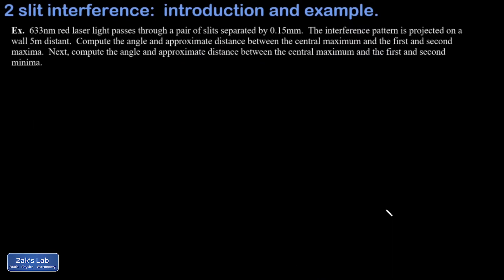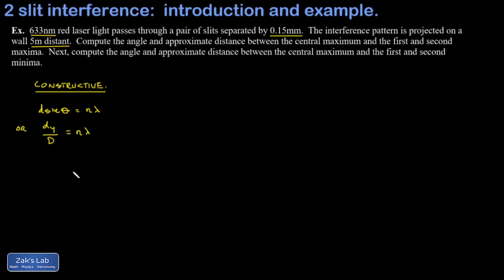Let's wrap up with a quick example. We have 633 nm red laser light passing through a pair of slits separated by 0.15 mm, with the interference pattern projected on a wall 5 meters away. We want to compute the angle and approximate distance y between the central maximum and the first and second maxima, and then the angle and distance to the first and second minima. For constructive interference we plug into d·sinθ = nλ. For the first maximum (n = 1): d = 0.00015 m and λ = 633 × 10⁻⁹ m.